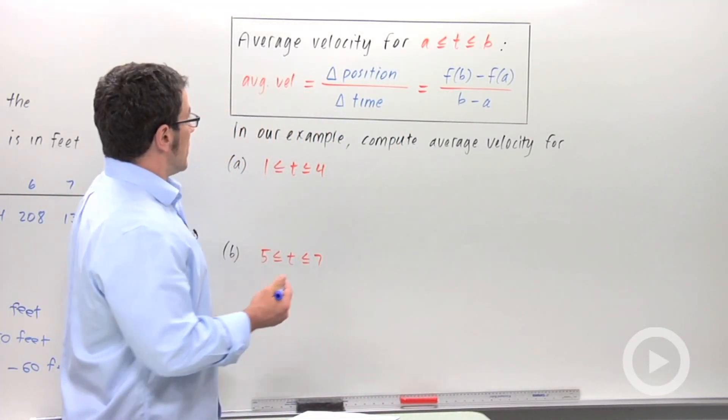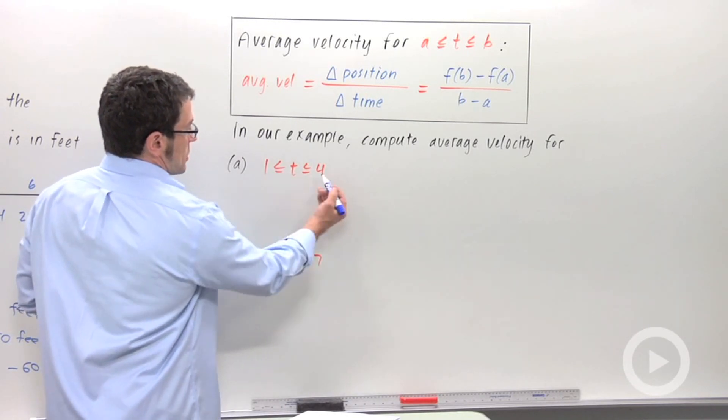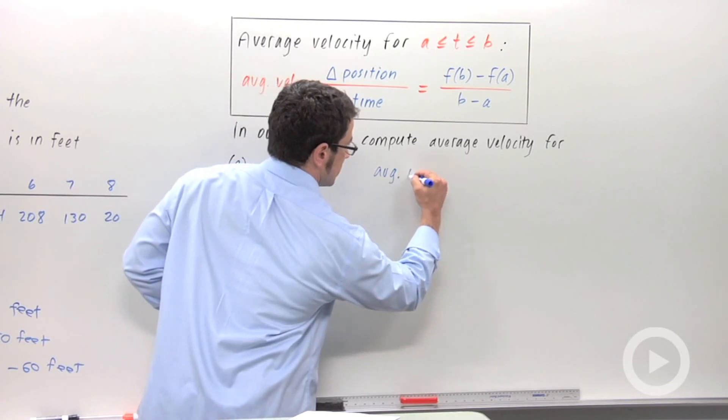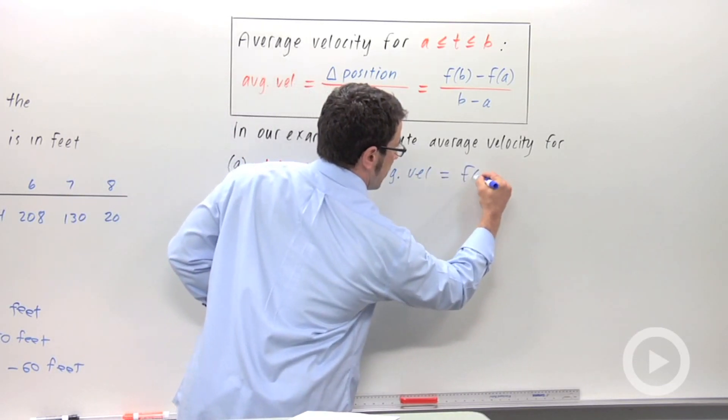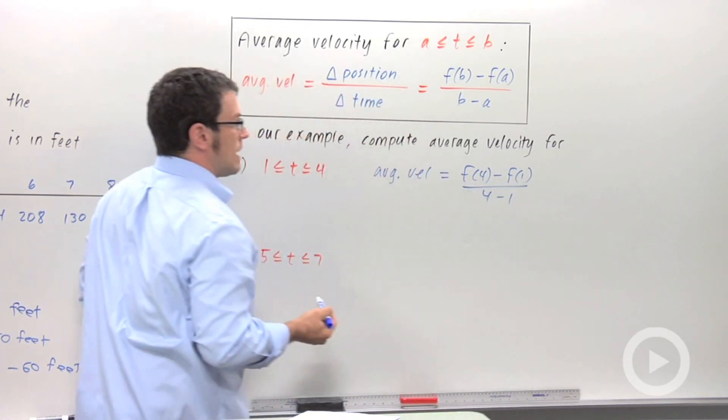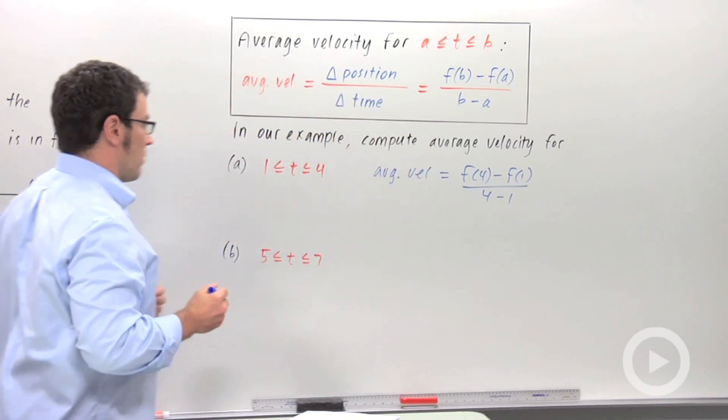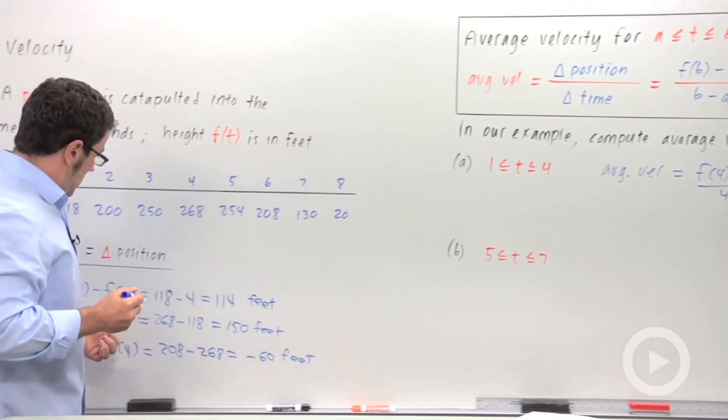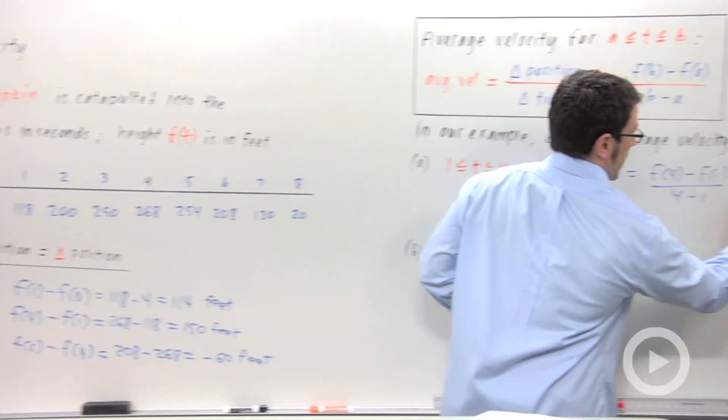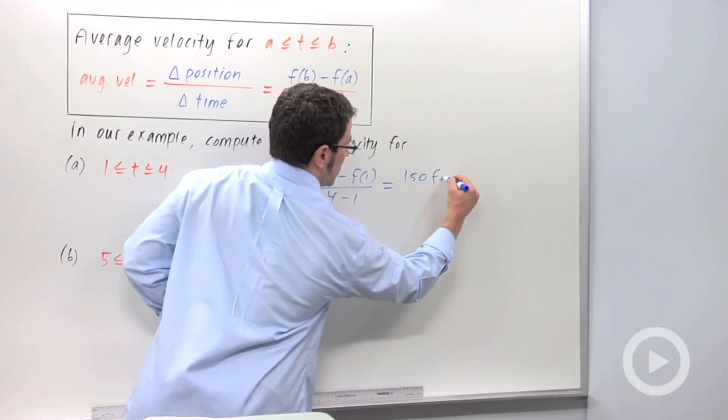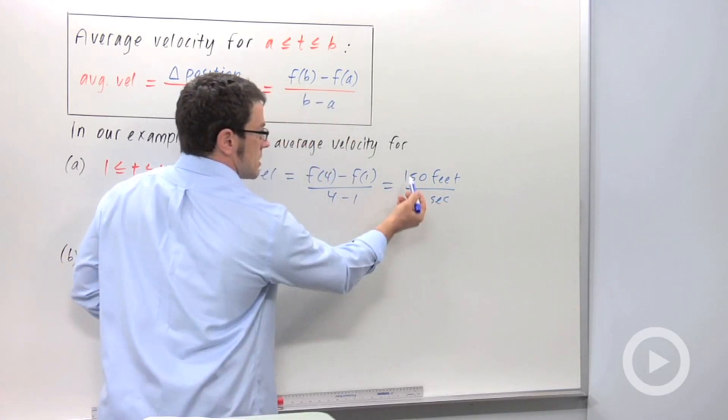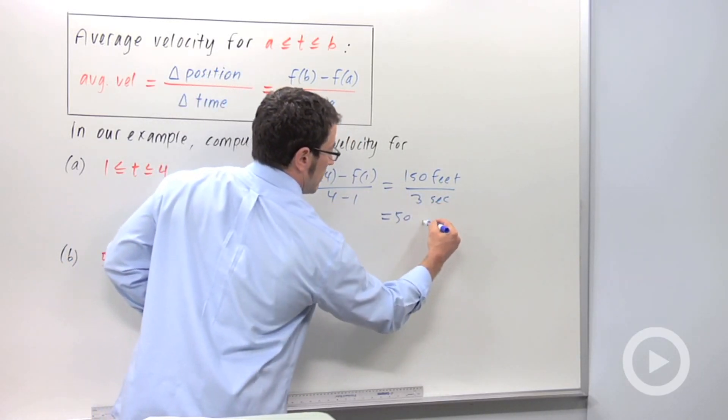Let's compute some average velocities. First, for the interval from 1 to 4, we would have average velocity is f of 4 minus f of 1 over 4 minus 1. Now we already calculated f of 4 minus f of 1. It's back here. 150 feet. So this would be, on top, 150 feet, and on bottom, 3 seconds. So this is going to be 50 feet per second.